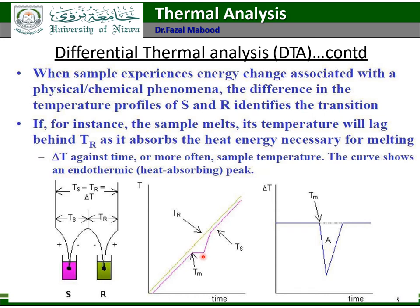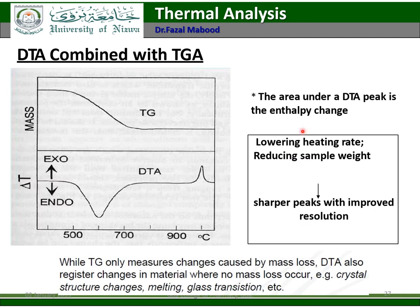The shape of the DTA curve can show endothermic or exothermic processes. In DTA combined with TGA, the TGA and DTA curves are shown together. The DTA curve tells you whether the process is endothermic — where the peak is directed downward — or exothermic — where the peak is directed upward. Lowering the heating rate and reducing the sample weight gives short peaks with improved resolution. The area under the peak represents the enthalpy change.